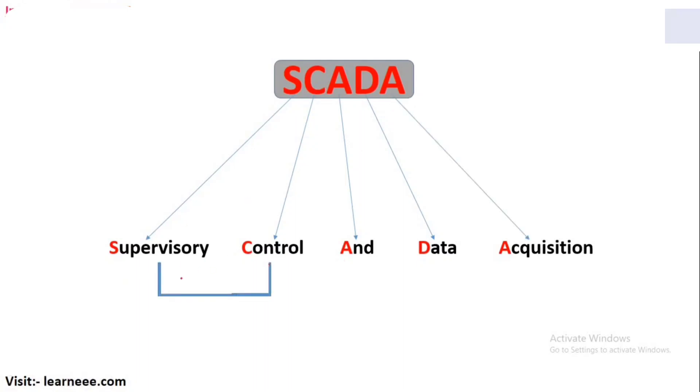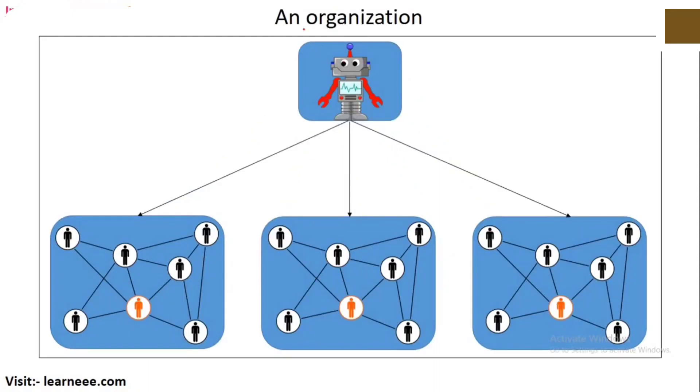First of all, we will divide it into two points. Let's look at supervisory control and data acquisition. We are going to talk about supervisory control. How is the supervisory control? Let's say there is an organization or company that is in three rounds. This is A, B and C. We have three departments - A department, B department and C department.